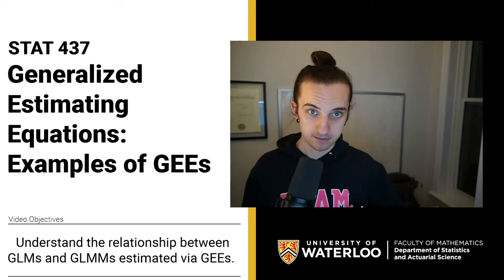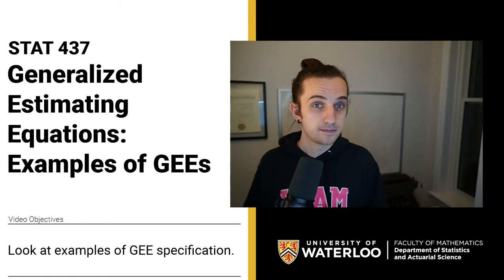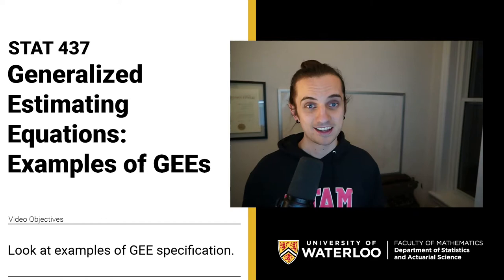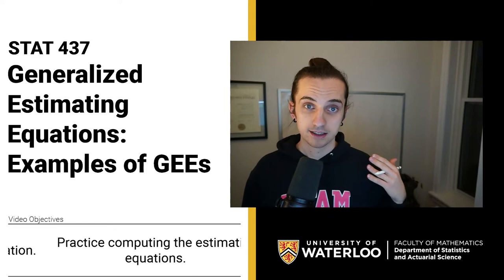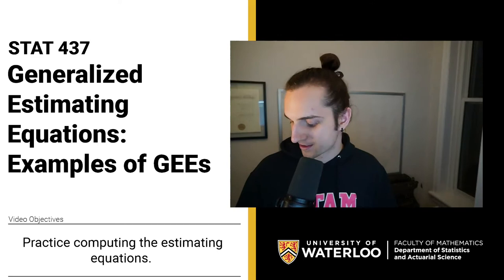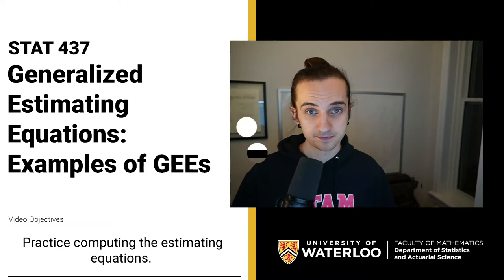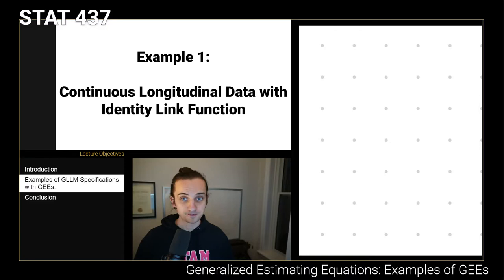Just like with GLMs, we're generally not going to be able to get closed-form estimators for these parameters, so we'll set up the problems and then in practice you're going to be using numerical estimation techniques to accomplish the actual parameter estimates. The first example we want to look at is what we do when we have continuous longitudinal data with the identity link function.